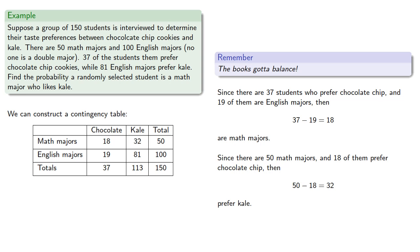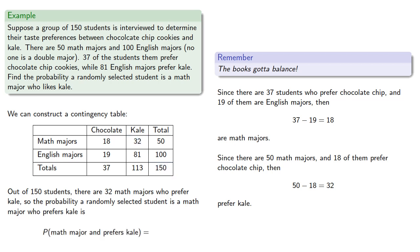And now that our contingency table is completely filled out, we can calculate any probability. So let's consider, of the 150 students, there are 32 math majors who prefer kale, so the probability a randomly selected student is a math major who prefers kale is 32 over 150.